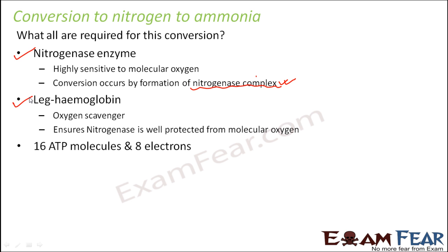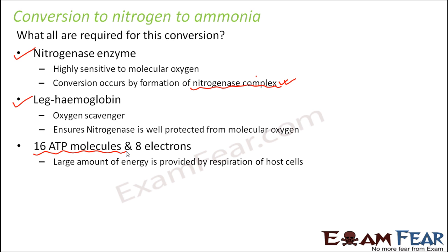16 ATP molecules are needed because the process must break a triple bond, which requires a huge amount of energy. That energy comes from these 16 ATP molecules and 8 electrons. Large amounts of energy are provided by respiration of the host cells. The host is nothing but the roots of the leguminous plant, and the energy produced by respiration in those cells is utilized for the conversion of nitrogen to ammonia.